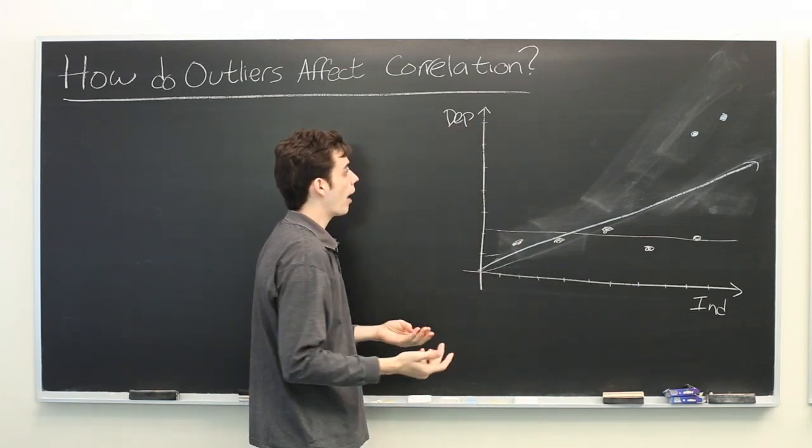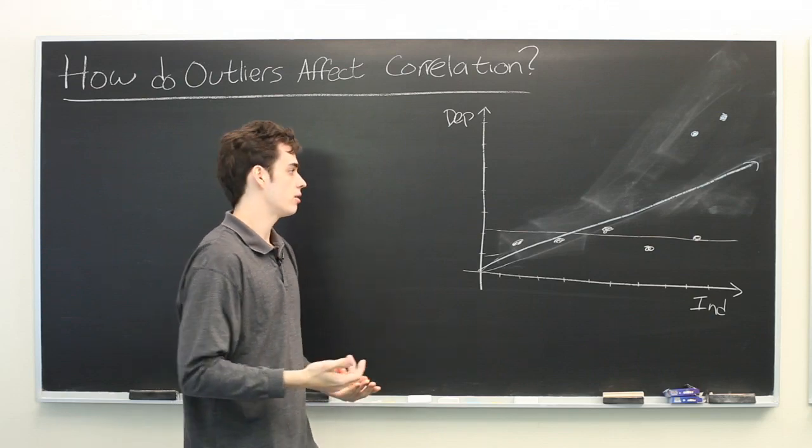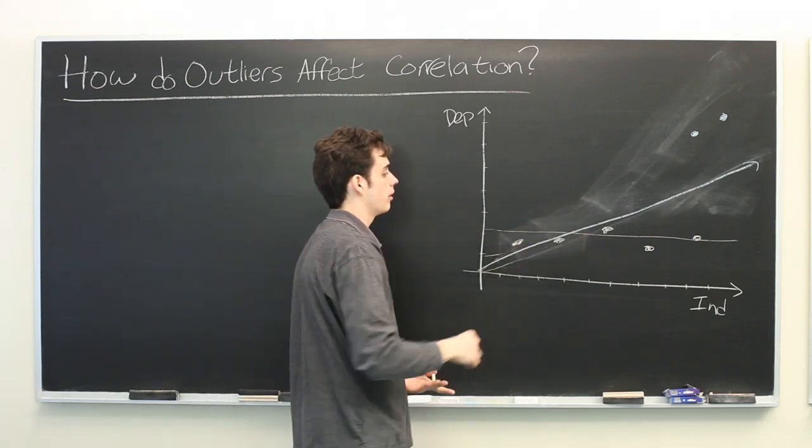And this is the reason why outliers are often removed from data sets when you're calculating a regression.